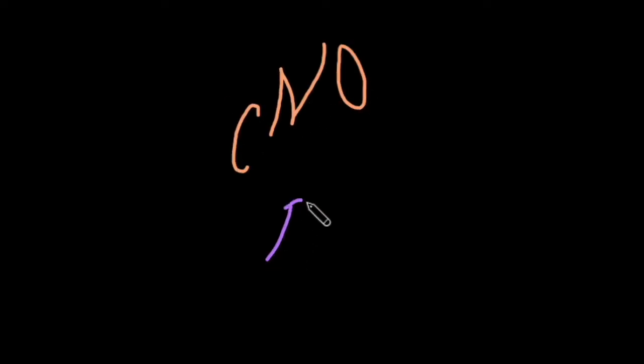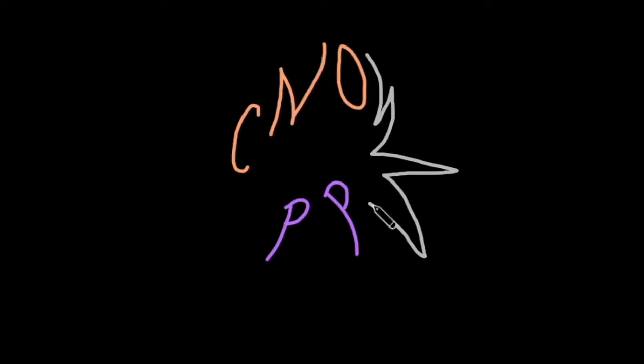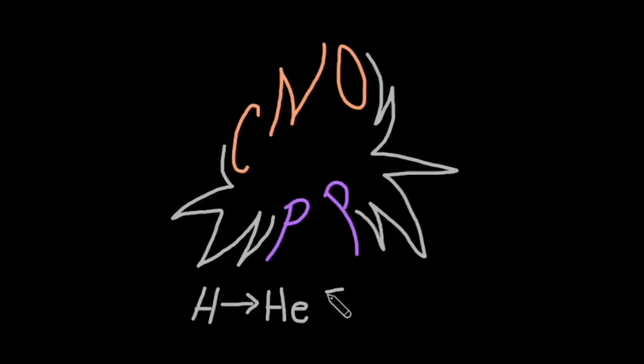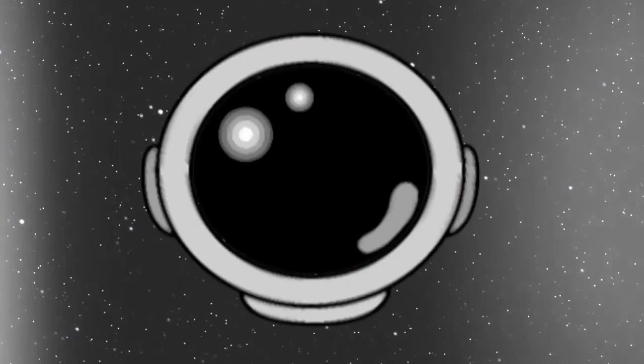Welcome to Astronaut. Today we're launching into two methods of how stars convert hydrogen to helium: the PP and CNO cycles. We'll talk about the difference between the two fusion chains and go over examples for each.